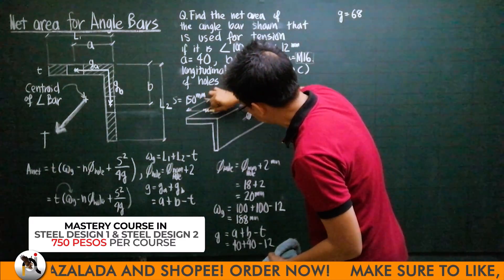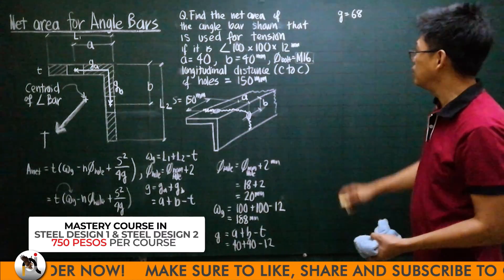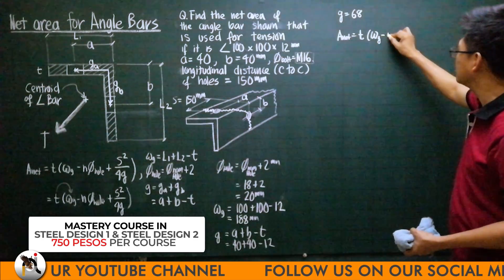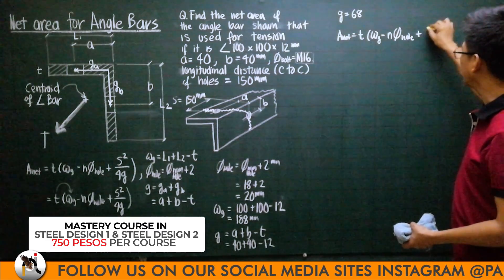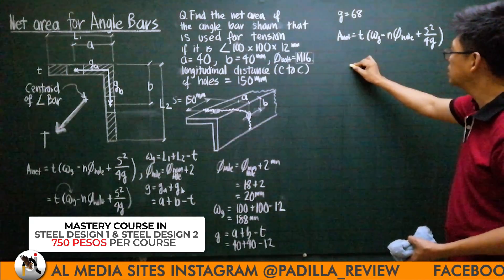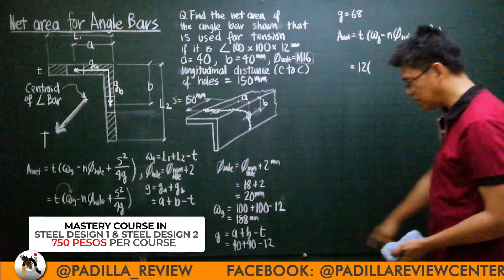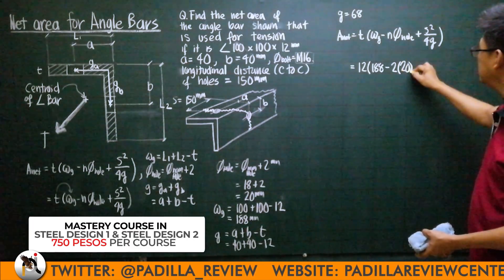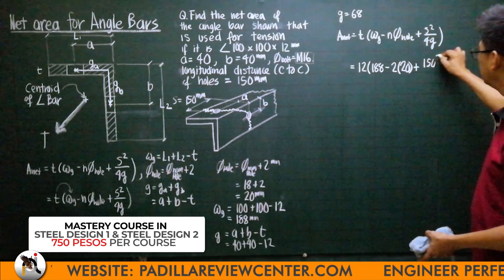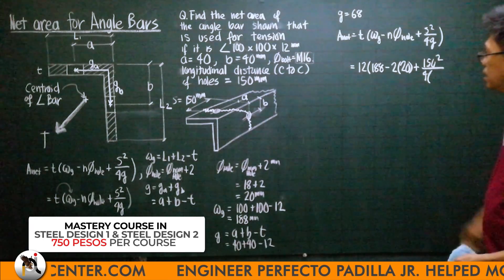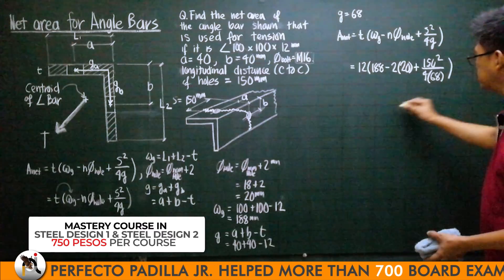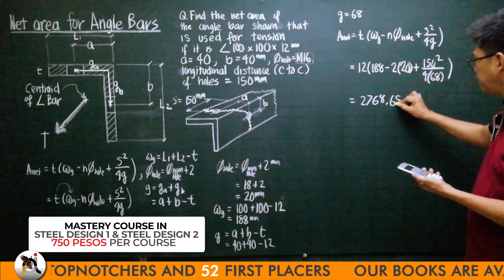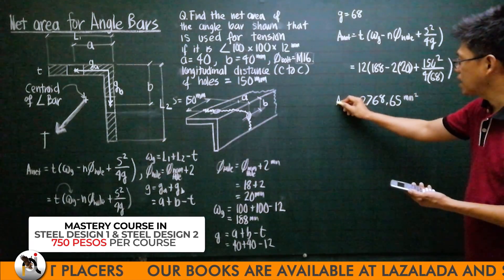For failure along this line, our net area is: thickness times (gross width minus n times diameter of hole plus s squared over 4g). Substituting: thickness = 12, gross width = 188, n = 2 holes, diameter of hole = 20, s = 150, g = 68. Computing this, the net area equals 2768.65 mm².